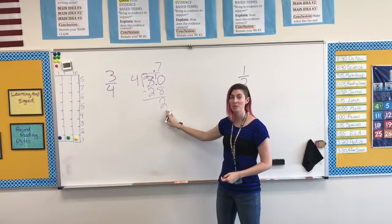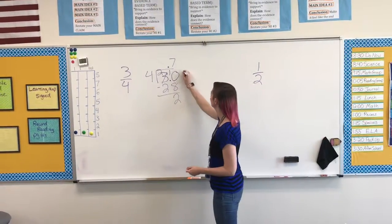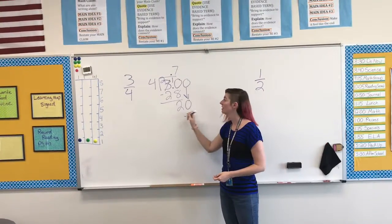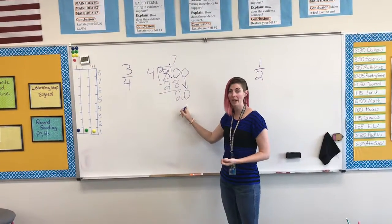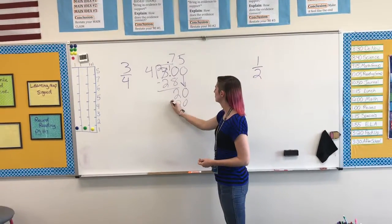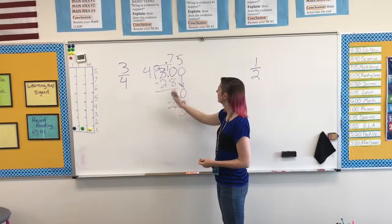4 still doesn't fit into 2. I'm going to add another 0. Bring that 0 down. Now it becomes 20. 4 can fit into 20 five times. 5 times 4 is 20. Subtract, and I get 0.